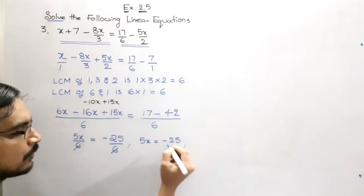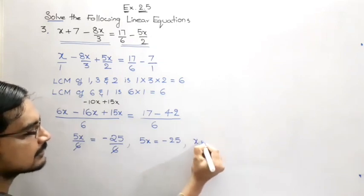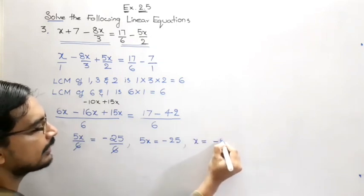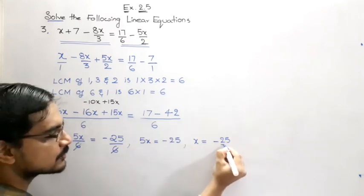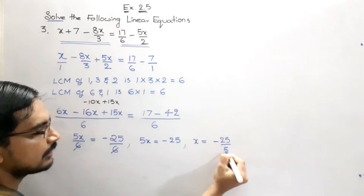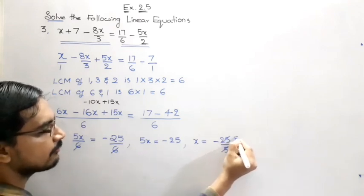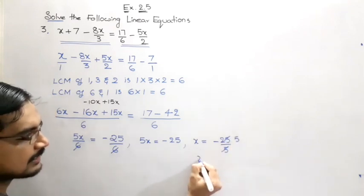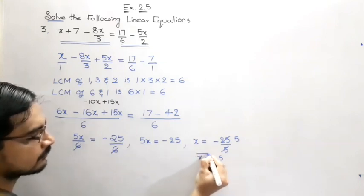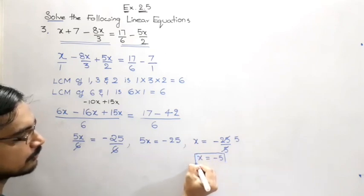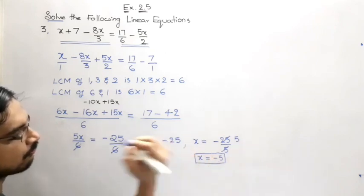Now what we can do, we want only the value of x. X is equal to minus 25. 5 is in multiplication, so if we transpose it it will go to division. 5 into 5 is 25. Therefore we can say that the value of x is equal to—so the value of x is going to be minus 5.